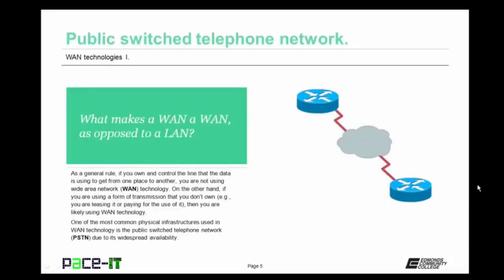Before I begin with the public switched telephone network, let's talk about what makes a WAN a WAN as opposed to a LAN. As a general rule, if you own and control the line that the data is using to get from one place to another, you are not using a wide area network or WAN technology. On the other hand, if you are using a form of transmission that you don't own — leasing a line or paying for the use of it — then you are likely using WAN technology.